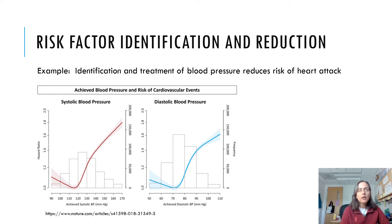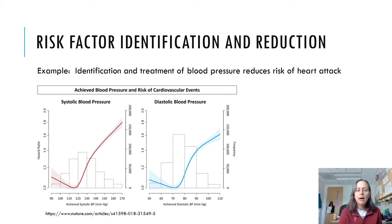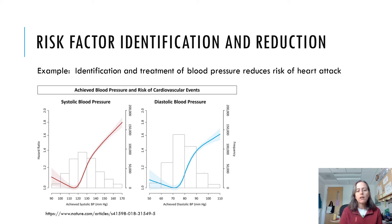One of the incredible strides we have made in medicine and public health over the last 50 years is understanding the importance of different risk factors for cardiovascular disease, in large part due to the Framingham Heart Study — which there's a brief media assignment about — but also many other scientific studies. What we're looking at here is a graph that shows the hazard ratio, or likelihood of having a cardiovascular event, depending on what your blood pressure is.